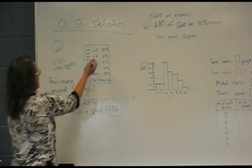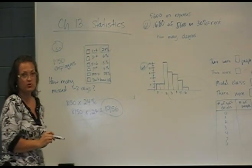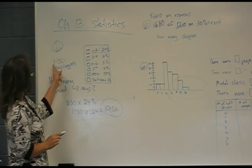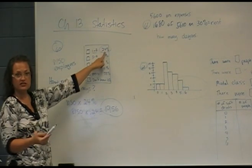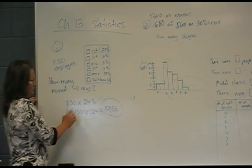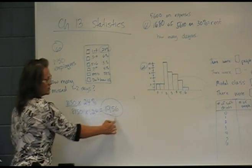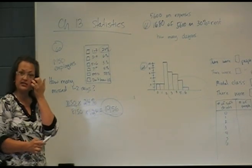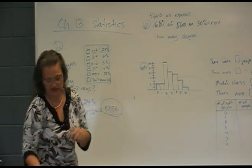So in the graph, it does tell us one to two days is 24% of the employees. So we should be able to take the 8,150 employees, take 24% of that, and see how many employees that missed. So it is a multiplication problem. 8,150 times 24% or times 0.24 equals 1,956 employees took one or two days off work last year according to this graph.